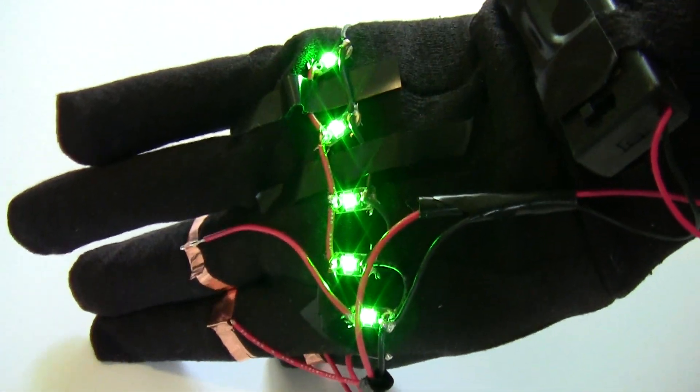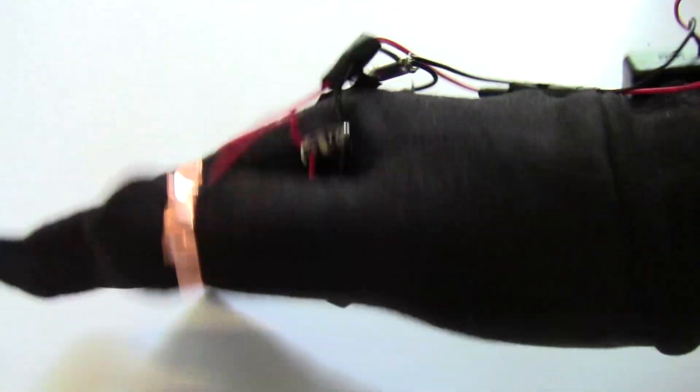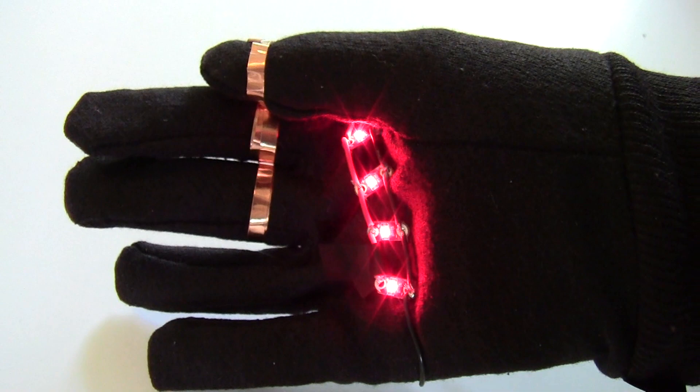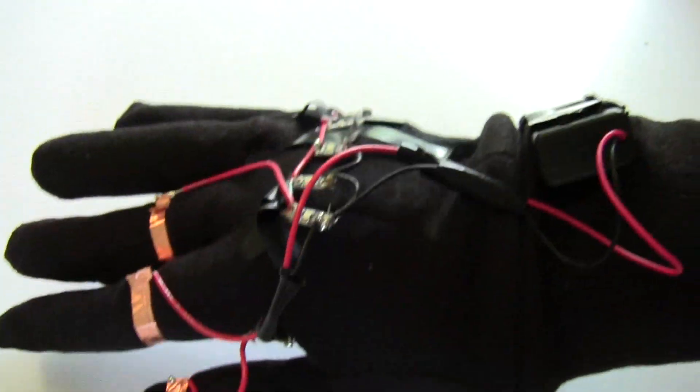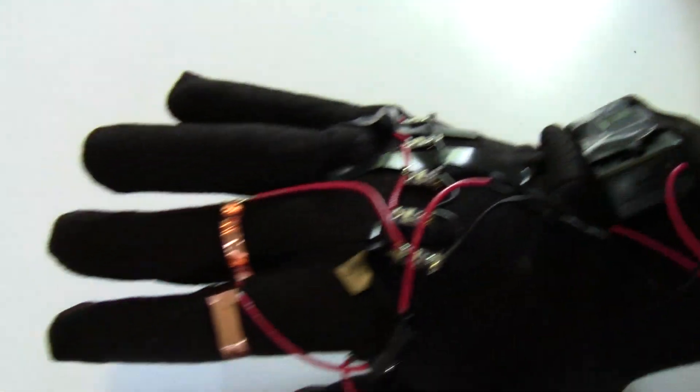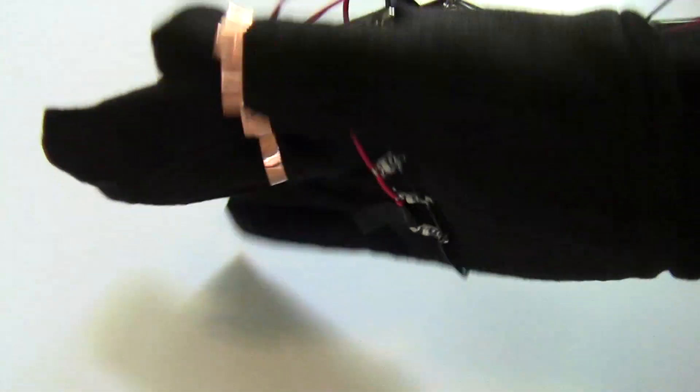This project does assume you will have access to a soldering iron, but you can also use conductive epoxy, or as a last resort, you can twist wires together, but we do recommend soldering the connections if possible. This video will take you through step-by-step directions to get started building the glove, and we also have written directions available on our website.